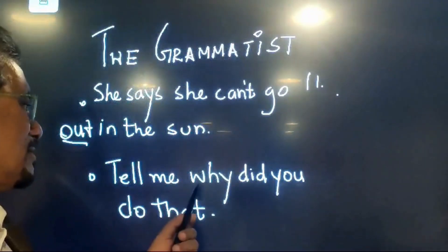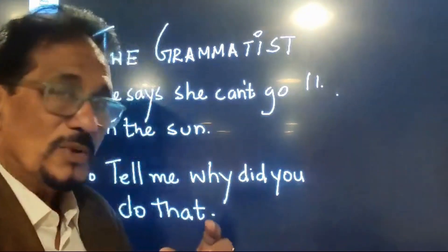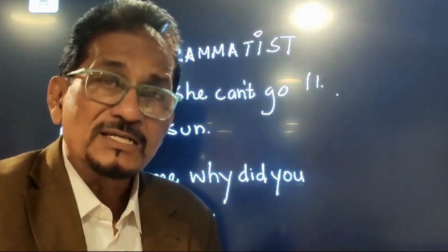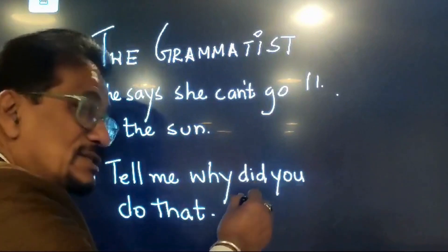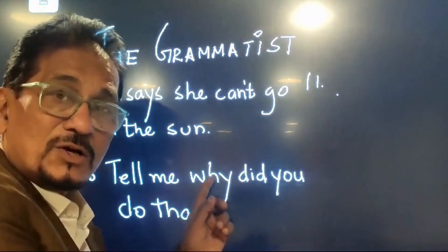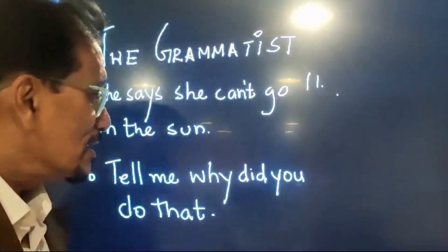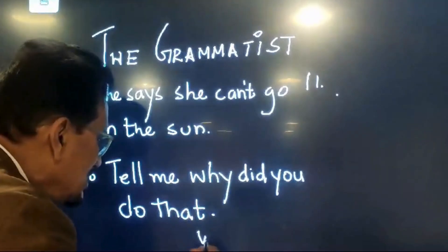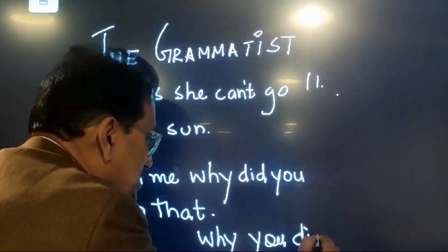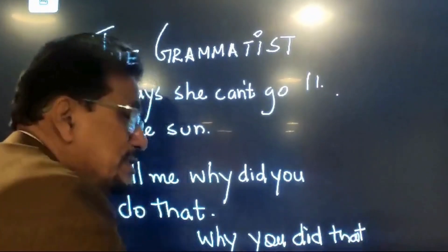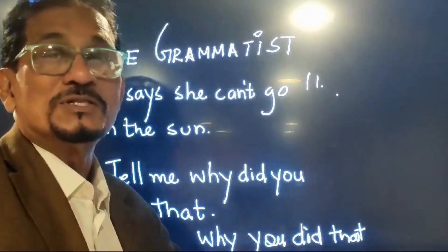Let's look at this next sentence: 'Tell me, why did you do that?' It seems to be a perfect sentence, but where is the mistake? When you say 'Tell me,' that turns it into an indirect question — so the word order changes. The correction should be: 'Tell me why you did that.' The subject has to come in. Because the answer is 'you did that,' so you say, 'Tell me why you did that.' That is the most important part.